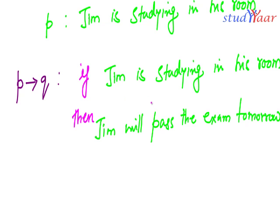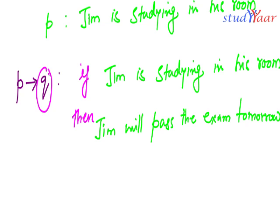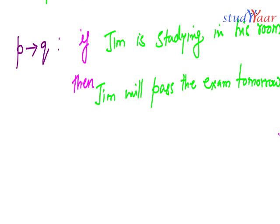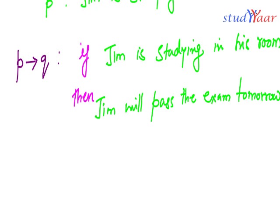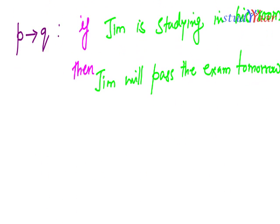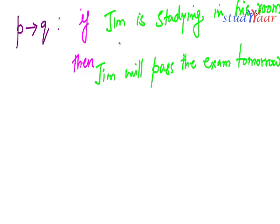Jim could play in the field today and still pass the exam if he cheats. So Jim's studying is not the only condition that decides whether he will pass — it also depends on whether Jim is cheating in the exam. That is your implication connective.